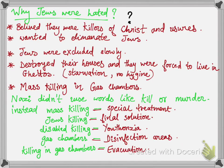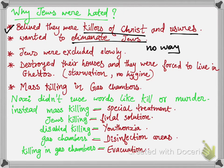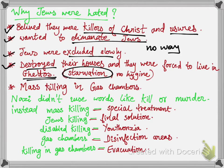Jews were hated because Nazis believed Jews were killers of Christ and were usurers — moneylenders charging very high rates of interest. Hitler wanted to eliminate all Jews and thought there was no other way. Jews were excluded from society; their businesses were boycotted, they lost their jobs, their houses were burnt down, and the places where Jews worshipped were also destroyed. All Jews were forced to live in ghettos with hunger, starvation, and no proper hygiene. Mass killing of Jews was done in gas chambers, where it took minutes to kill thousands of people.